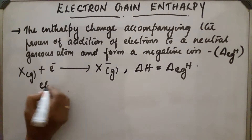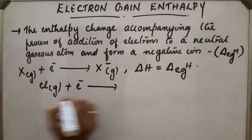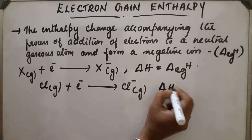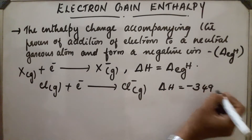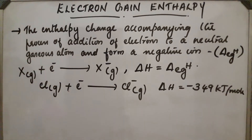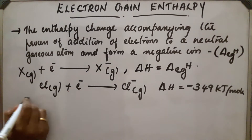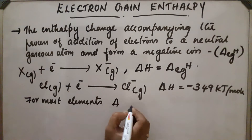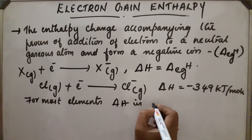Example: chlorine atom. Chlorine atom gets converted into Cl⁻ ion and here the delta H is found to be minus 349 kilojoule per mole. For most of the elements this delta H will be a negative value, meaning energy is released during this process.